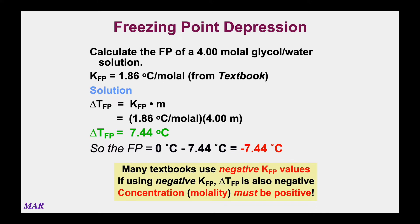A little warning: sometimes in certain textbooks, people will use a negative KFP value — instead of 1.86, they might list it as negative 1.86. They're trying to correlate a negative K with a negative delta T. The important thing is that molality — the m — is like a mass, and you can't have negative mass in chemistry. Molality is always going to be a positive number, no exceptions. Whatever delta T you calculate, the delta T will be that much less than the regular freezing point. In this problem, we had a positive 7.44, and the freezing point of the solution will be 7.44 degrees less than the regular freezing point — so that's negative 7.44.